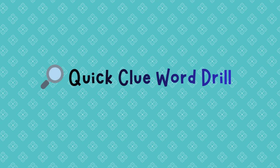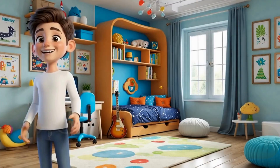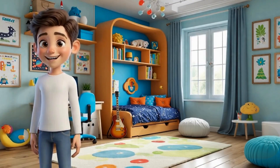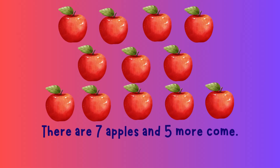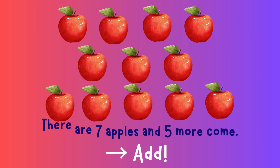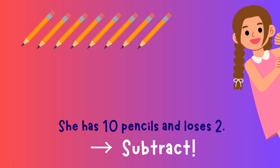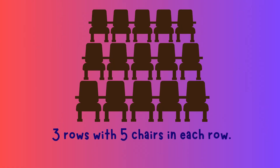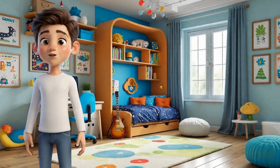Quick clue word drill — let's practice spotting clue words fast. I'll say a short sentence; you shout or whisper the operation. Ready? "There are seven apples and five more come." Add! "She has ten pencils and loses two." Subtract! "Three rows with five chairs in each row." Multiply! "Twenty candies split into four bags." Divide! Great listening! You're getting faster!